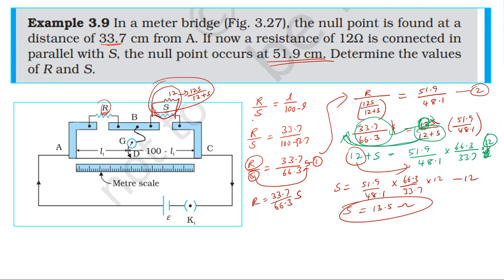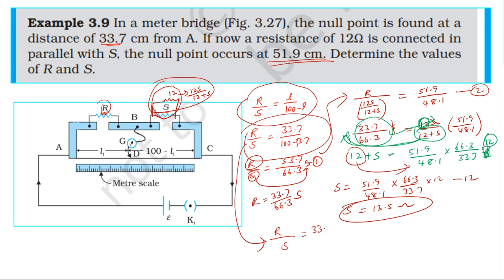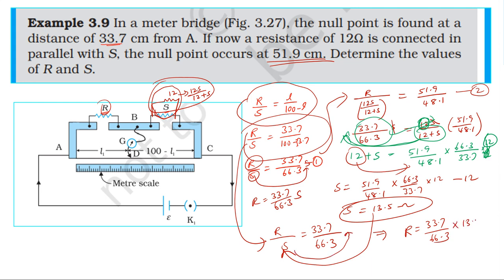Solving gives S is approximately equal to 33.7. The value of S comes out, and from R by S equal to 33.7 by 66.3, R can be determined.